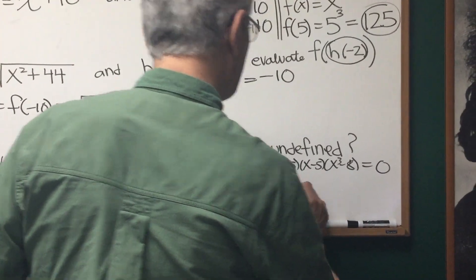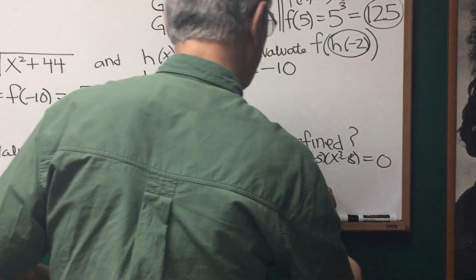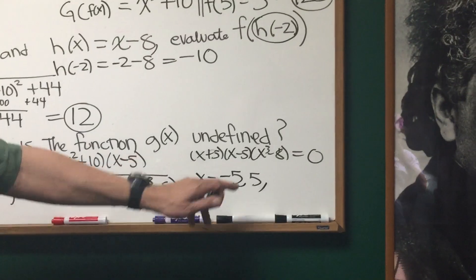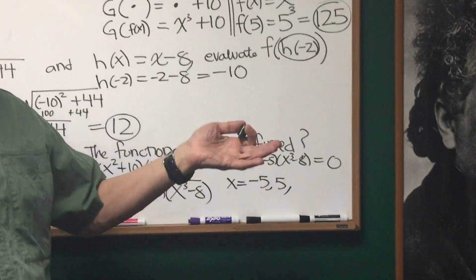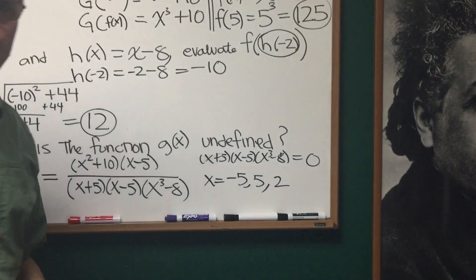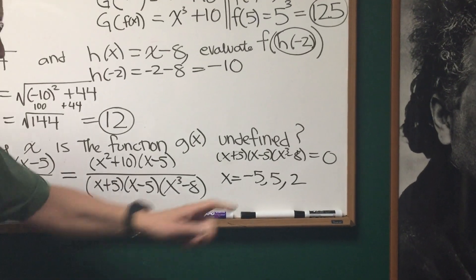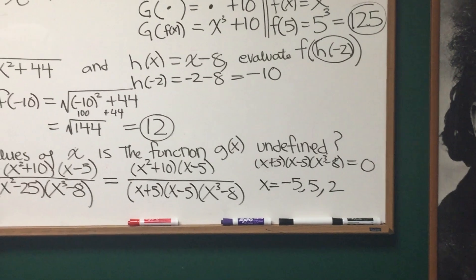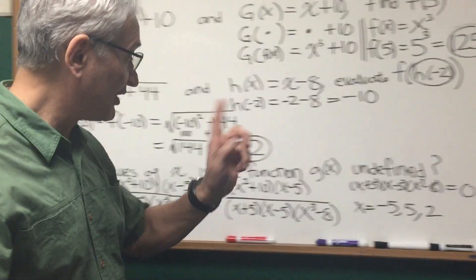We can see that the values of x that make this 0 is equal to negative 5, positive 5. And by observation, x cubed minus 8, when x is equal to 2, it's going to make that expression 0. Which means we cannot have 0 in the denominator. And these are the values for which g of x is undefined.